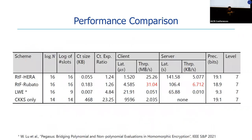Here are performance comparisons. We compare Rubato to HERA, LWE-to-RLWE conversion (from Pegasus, published in IEEE S&P 2021), and a CKKS-only environment. For fair comparison, we try to match the same remaining level, log of slots, and precision. The LWE-to-RLWE conversion has low log of slots and low precision because its implementation only supports those parameters. Both throughputs of Rubato outperform the others.